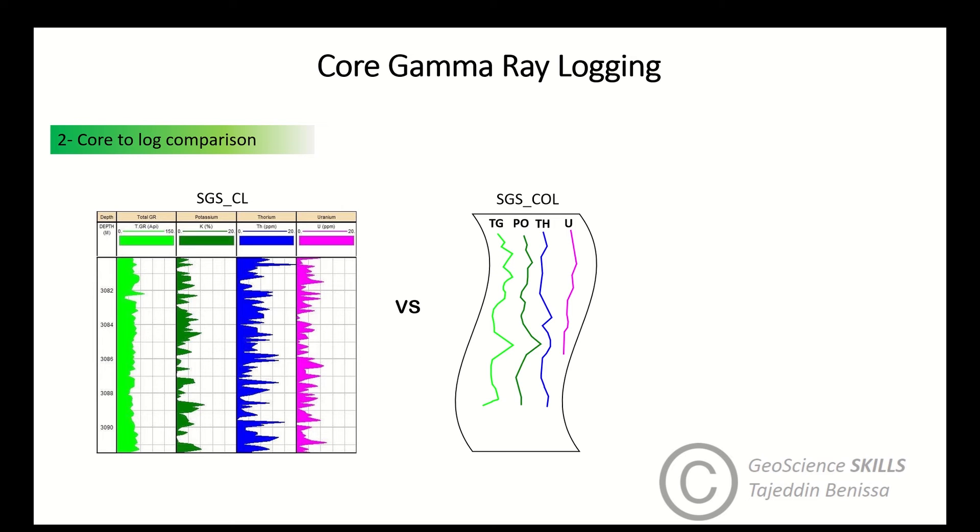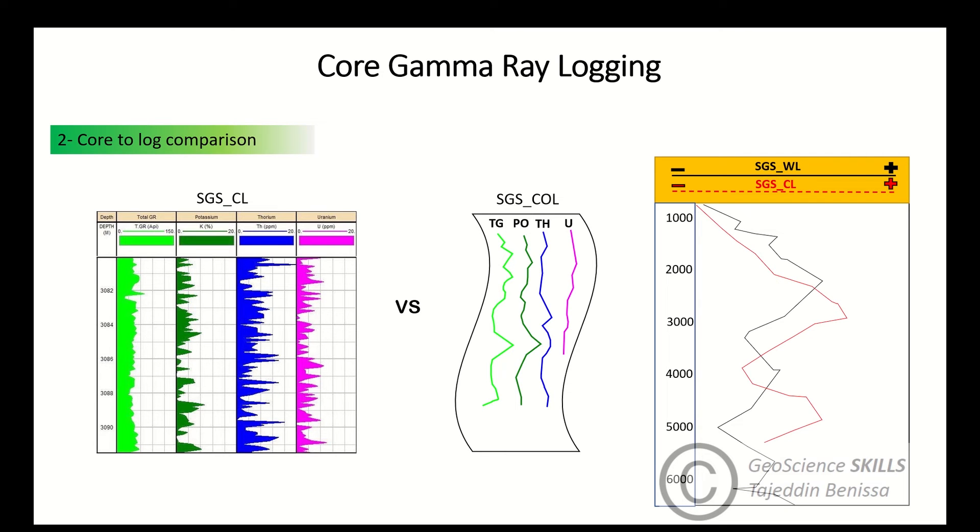You can compare the magnitude of the values of each parameter and detect if some errors are there. In addition to that, you will be doing a depth shift. Core gamma ray log is displayed or plotted in downhole log format at a scale of typically 1 to 200 to allow direct comparison.